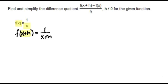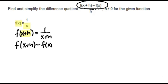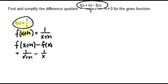Then we want to find the whole numerator, f of x plus h minus f of x. We've already found f of x plus h, and that's 1 over x plus h. We're going to subtract f of x, which is our given function, so we subtract 1 over x. And this is our whole numerator of the difference quotient.